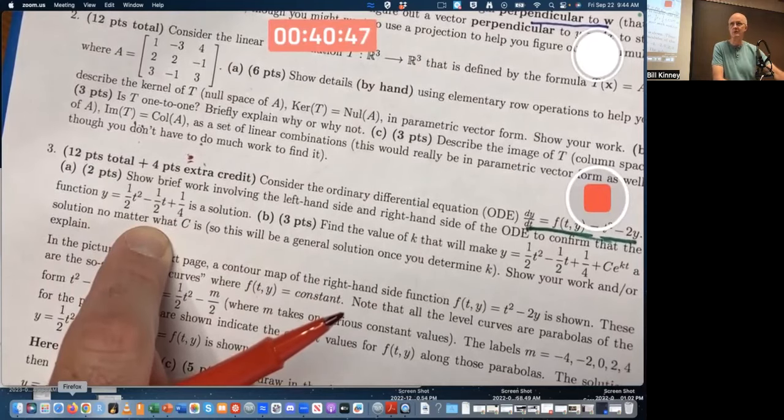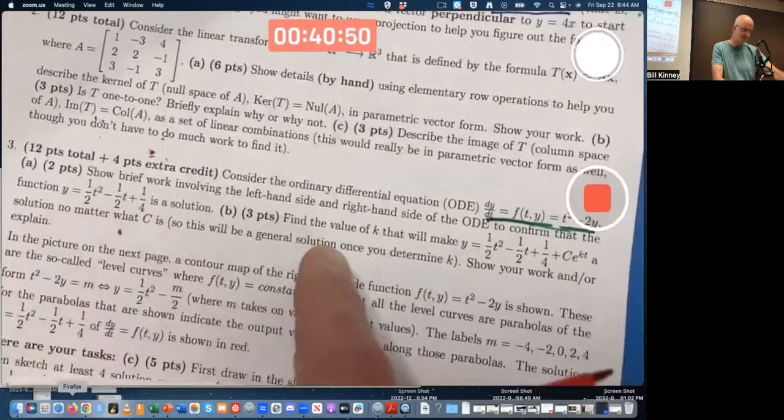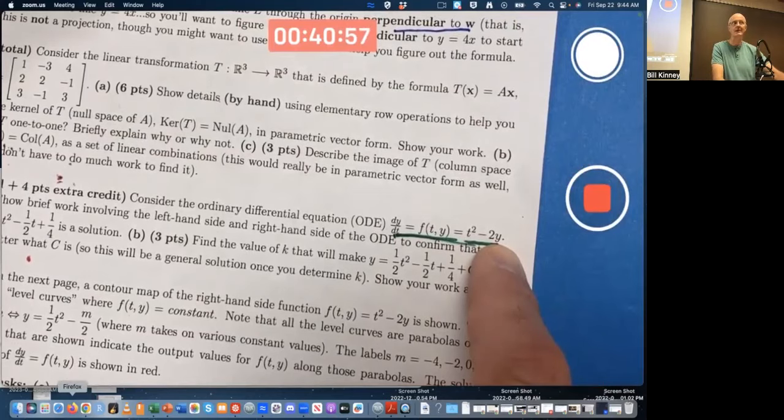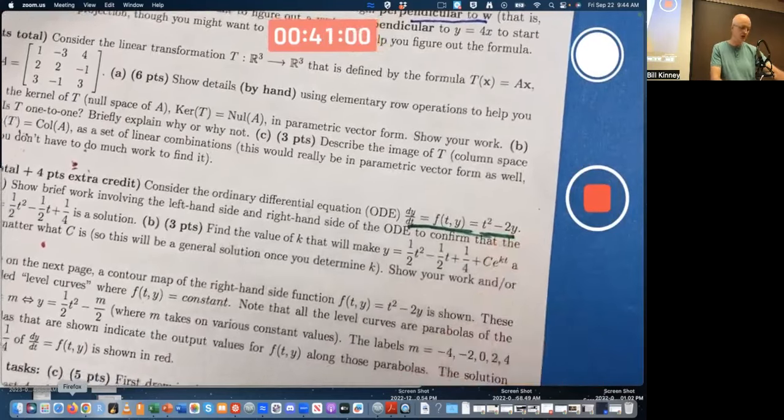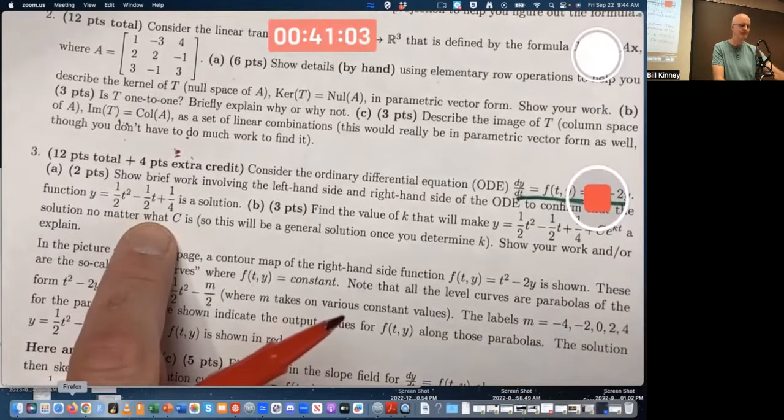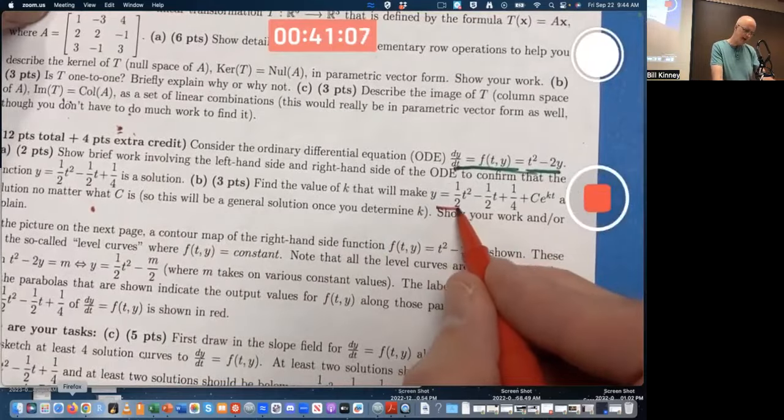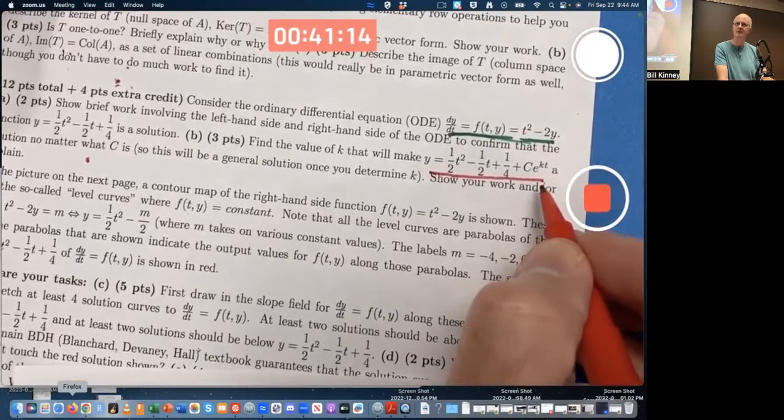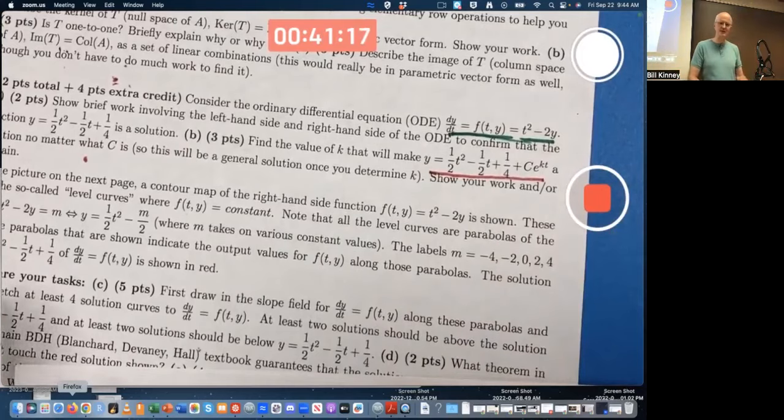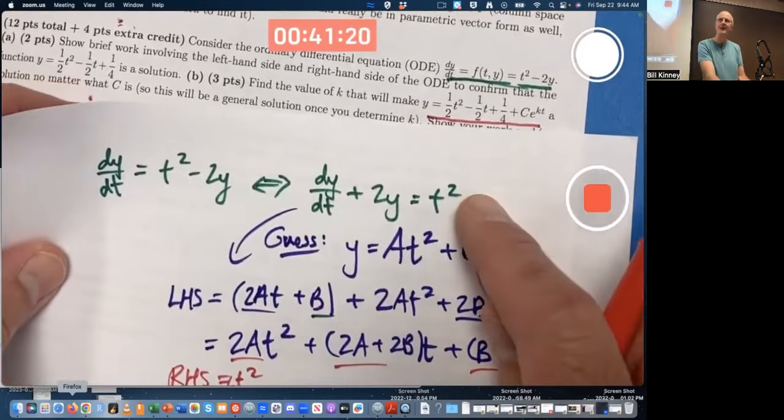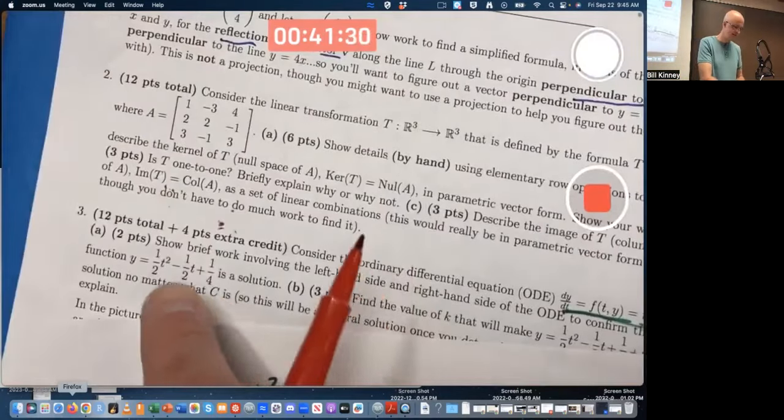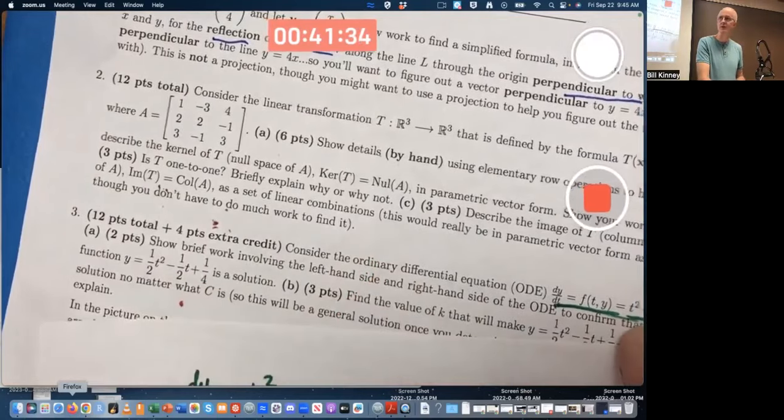You didn't have to do all that work that I just showed you. You just had to check that this works. Differentiate it. Left-hand side. Also plug it in in place of y there. See that you get the same thing when you simplify. That's all you had to do. But there I showed you how I figured this out. Then I also say find a value of k that's going to make this a solution no matter what c is, where there is an exponential function there. But wait a minute. Didn't I say just five minutes ago exponential functions can't solve this differential equation? They can't solve them by themselves. But if you figure out the appropriate value of k and add this function, then the result can solve the original differential equation.